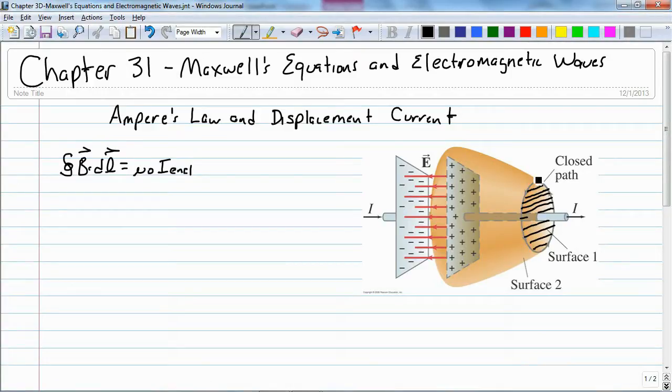But Stokes' Theorem says that if I have a value with this contour, then I need to have the same value even though this shape is distorted. But we know that with a capacitor, there is no current flow between the plates.